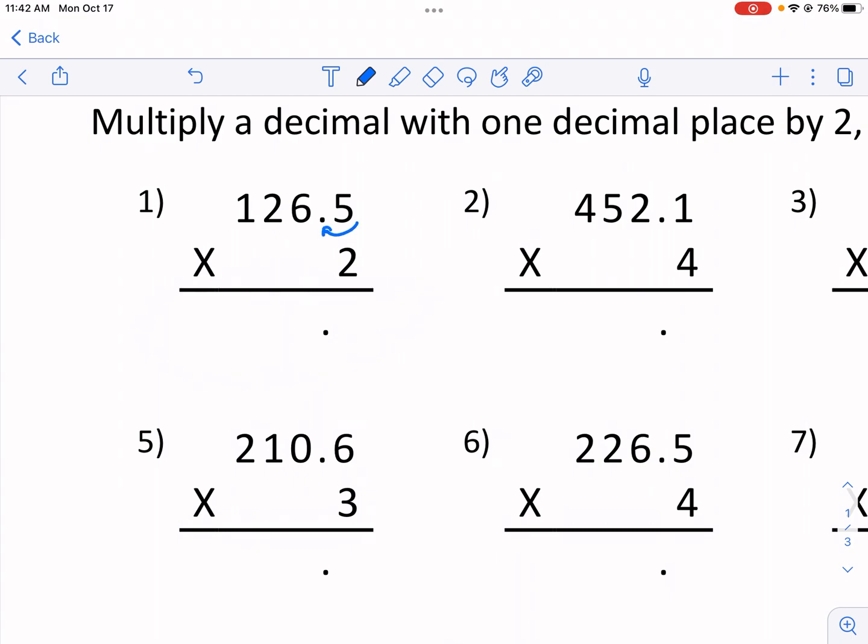you are going to move it by the number of places that you count over. So if we had a decimal over here, one two, and if we had another one right here, that'd be three. So you count the total number that you move over and then that's how many you would move it over for the final product.